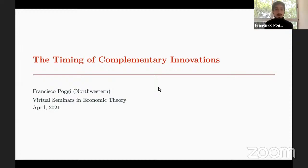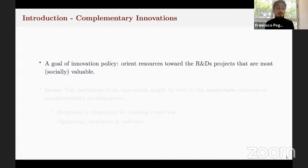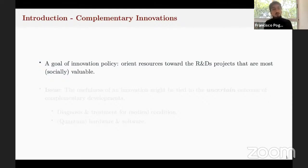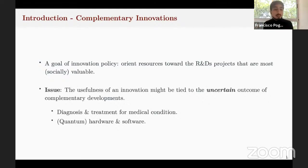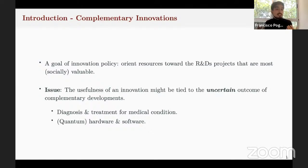Great, thank you so much Max and the rest of the organizers for this opportunity, and thanks also to the guest panelists. Today I'm going to talk about the timing of complementary innovations. One of the main goals of innovation policy is to orient resources towards the research and development projects that have more value from a social point of view — like the vaccine now has a lot of value, so we want society to allocate a lot of resources to that particular development. An issue is that sometimes the usefulness of an innovation may be tied to the uncertain outcome of other complementary development.